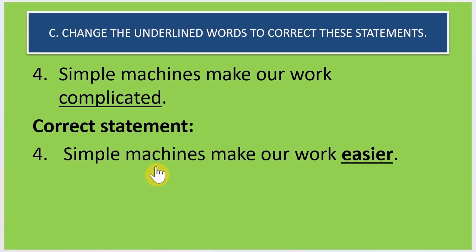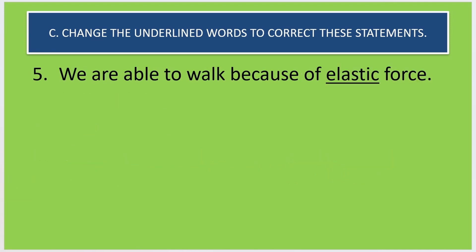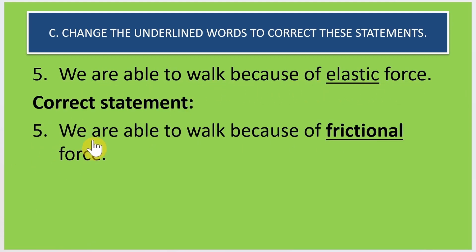Fourth: simple machines make our work complicated — this is not true. The correct statement is simple machines make our work easier. Fifth: we are able to walk because of elastic force — the correct statement is we are able to walk because of frictional force. Remember, if frictional force is not there it would be very difficult to walk on any surface.